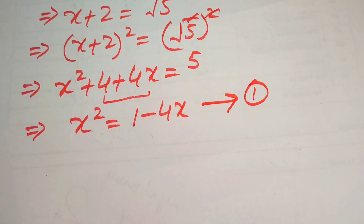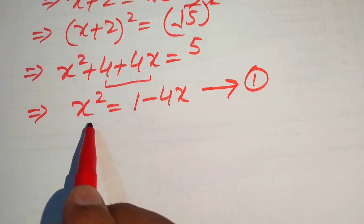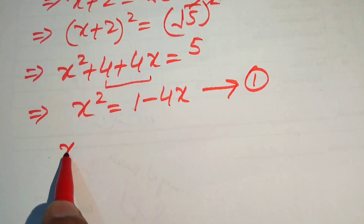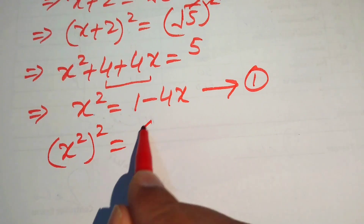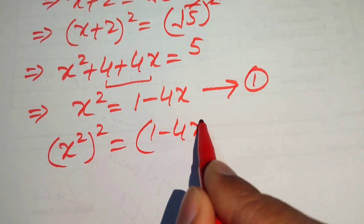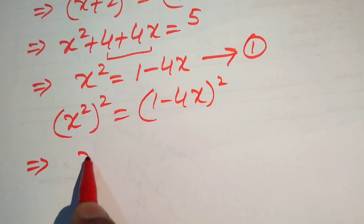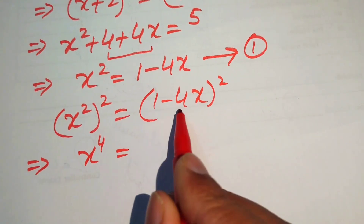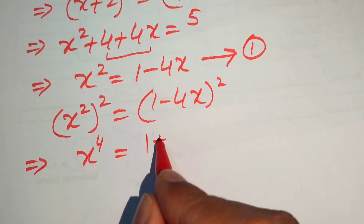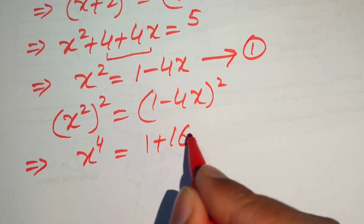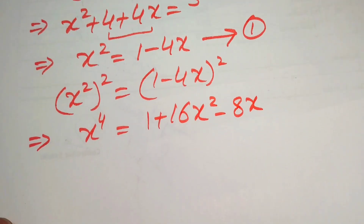To find x⁸ we square both sides of x² = 1 − 4x to get x⁴ = (1 − 4x)². Expanding this formula gives x⁴ = 1 + 16x² − 8x.